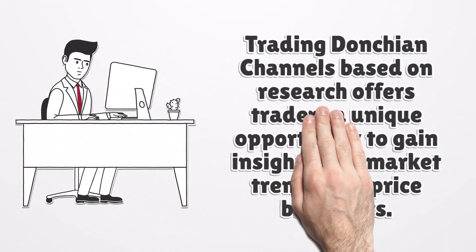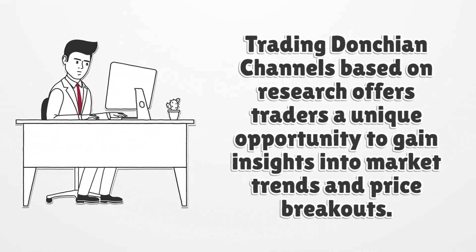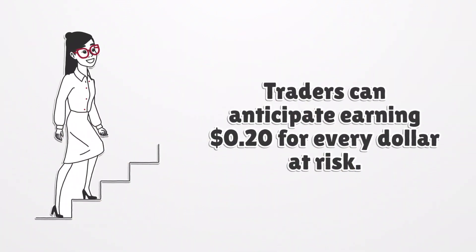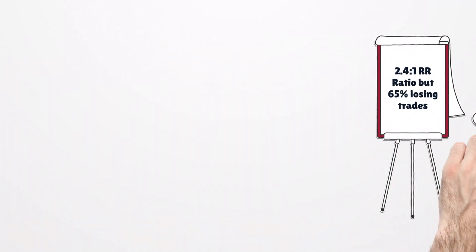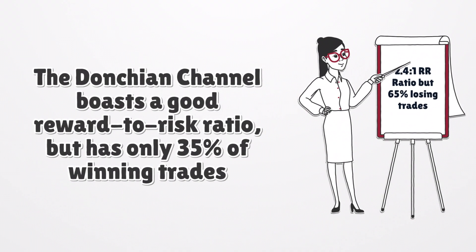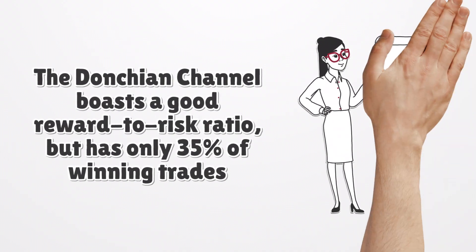Trading Donchian Channels based on original data and research offers traders a unique opportunity to gain insights into market trends and price breakouts. Our original 360 years of data research shows a low profit expectancy ratio of 0.2. Traders can anticipate earning 20 cents for every dollar at risk. The Donchian Channel has a reward-to-risk ratio of 2.4 to 1, but 65% of trades are losers, meaning with its default settings it is an unreliable trading indicator.